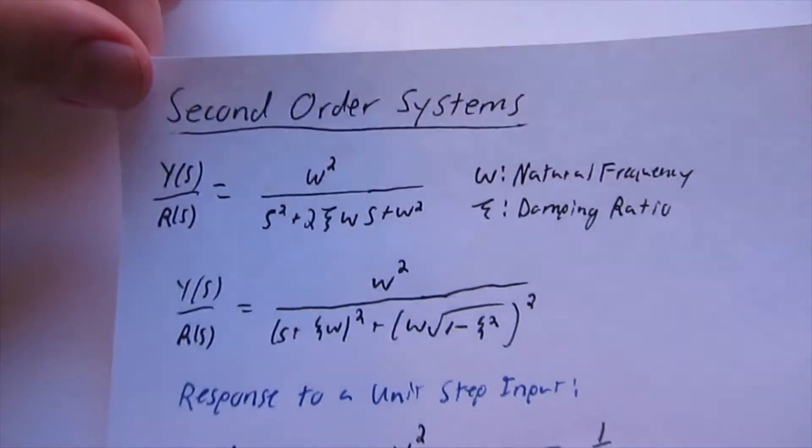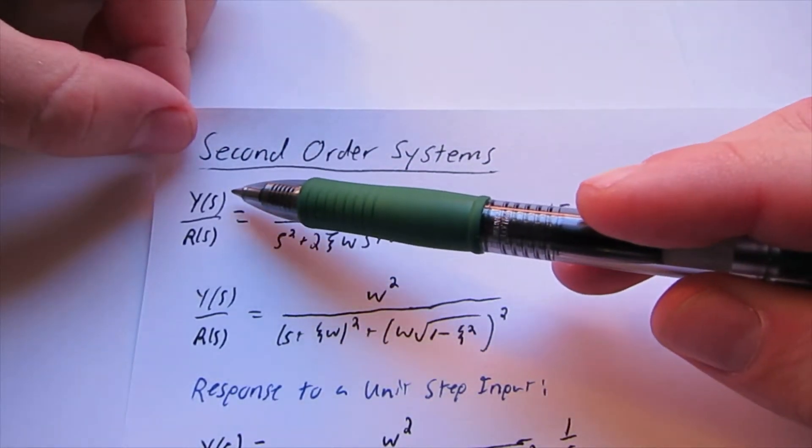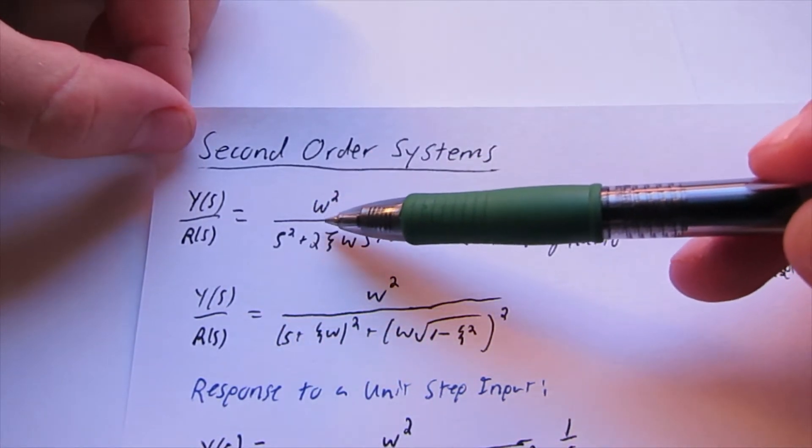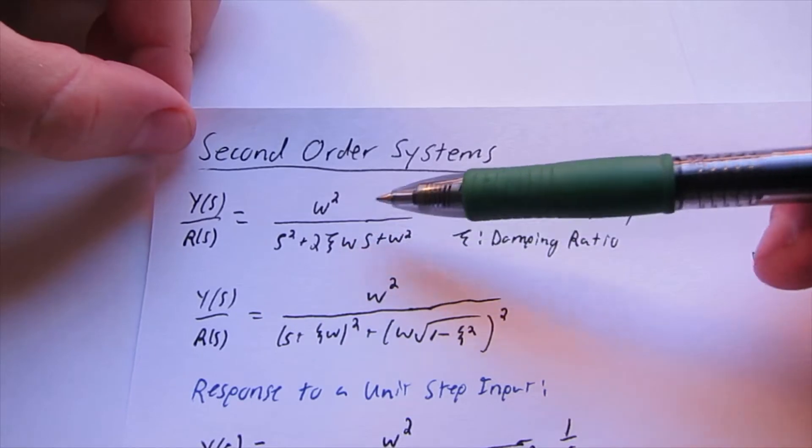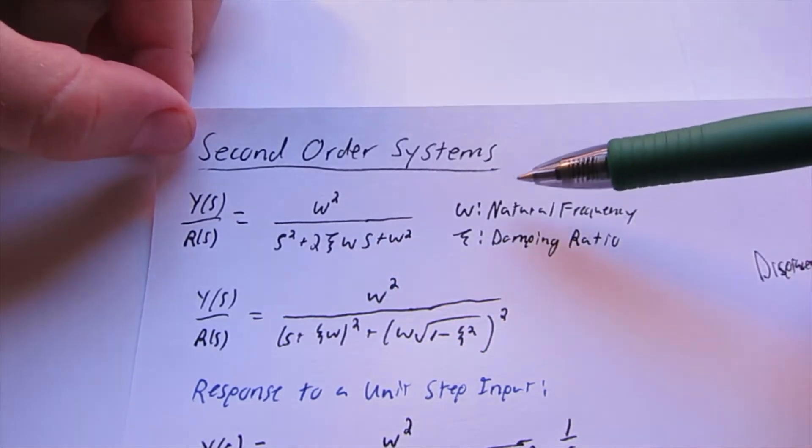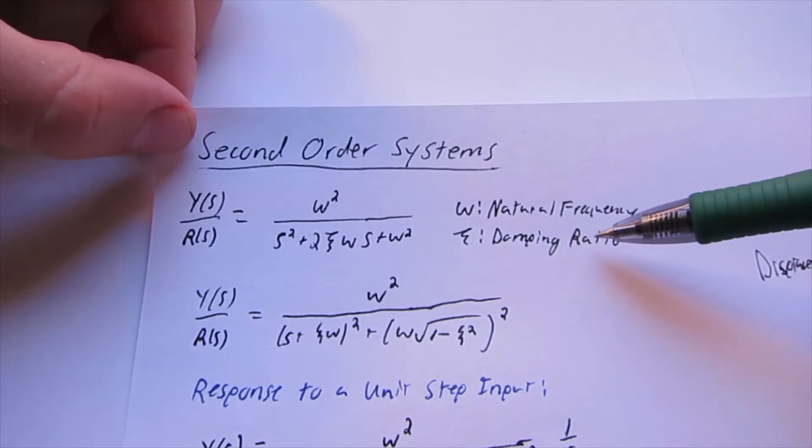So a second order system can be written out like so, where we have our output over our input equals this omega squared divided by s squared plus 2 zeta omega times s plus omega squared, where omega is our natural frequency and our zeta is the damping ratio.